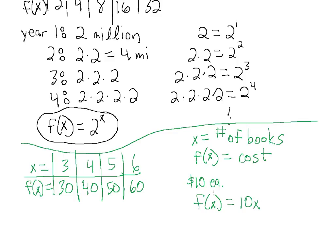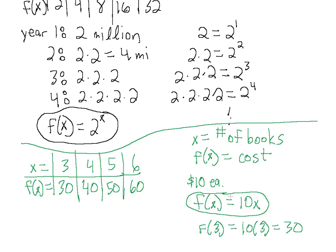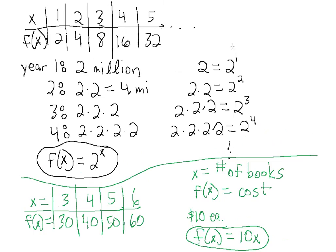So our cost, or f of x, equals $10 times the number of books, which is 10x. We can verify this: if x equals 3, then f of 3 equals 10 times 3, which is 30 — and that is indeed our value. So we can write the function f of x equals 10x for this situation.